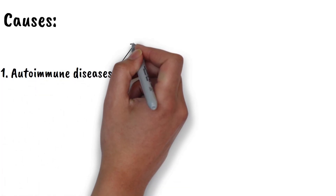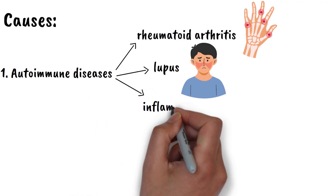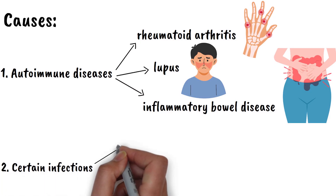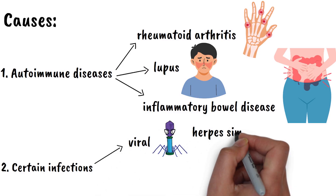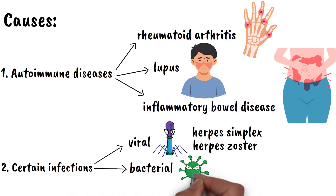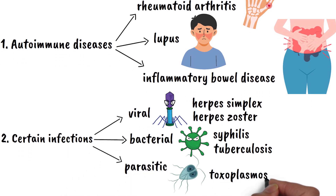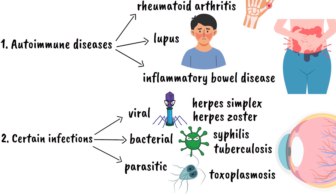The causes of uveitis are remarkably diverse, which is part of what makes this condition so challenging to diagnose and treat. Many cases are associated with autoimmune diseases like rheumatoid arthritis, lupus, or inflammatory bowel disease — as if these systemic conditions create a state of immune hyperactivity that spills over into the eyes. Certain infections can also trigger uveitis, including viral infections like herpes simplex or herpes zoster, bacterial infections like syphilis or tuberculosis, and even parasitic infections like toxoplasmosis. In these cases, the infection either directly invades the eye tissue or triggers an immune response that affects the uvea.